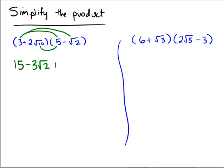Inside: 5 times 2 is 10, so we get 10√10. In the last place, we have minus 2 times √20. Now, √10 we don't need to worry about — that's just 2 times 5. But 20 is 2 times 10, or 2 times 2 times 5.